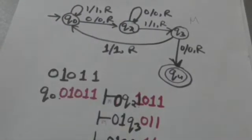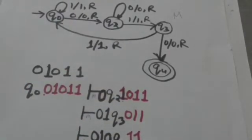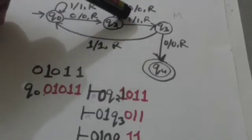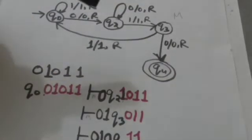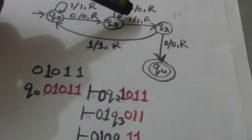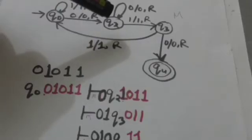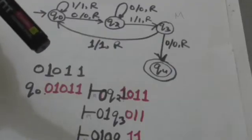After reading symbol 0, Turing machine M comes into a new configuration. Now it has to read the symbol 1. When the Turing machine M is in state Q2 and reads the symbol 1, it jumps to state Q3, replaces the symbol 1 by tape symbol 1, and moves its head one position to the right.